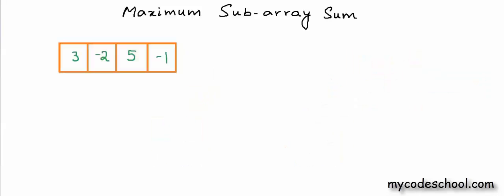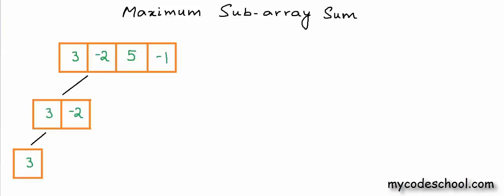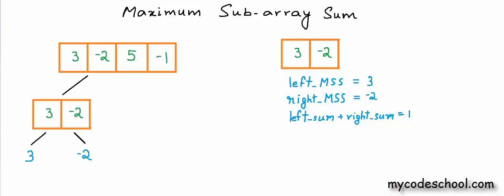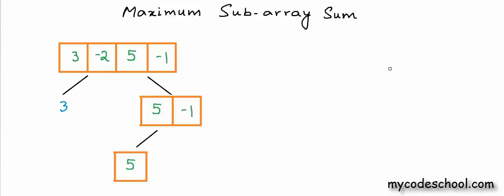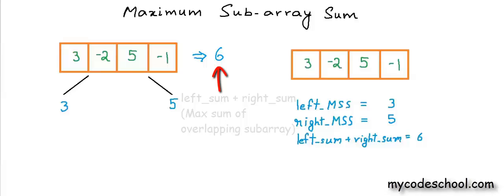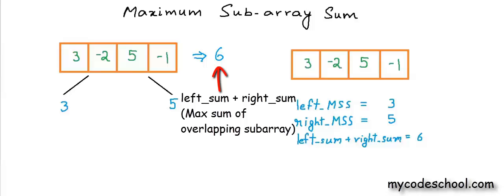At each step, we recurse over the left and right half of the array. We have reached a case where we have an array of size 1 — this will be the base case of our recursion. When there is only one element in the array, the value itself is the MSS of that array. Now we have an array whose left MSS is 3, right MSS is minus 2, and the best possible subarray through the middle is 1. Therefore, the MSS of this array is 3, which is the maximum of all three values. Similarly, we have an array whose left MSS is 5, right MSS is minus 1, and the best subarray through the middle is 4. Therefore, the answer from here is the maximum of all three values, which is 5. Finally, we have the answer as 6, which is the maximum sum subarray for this given array.